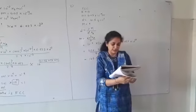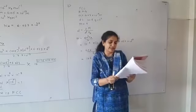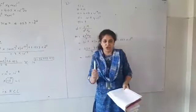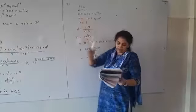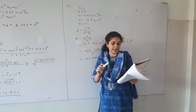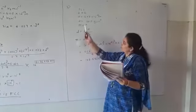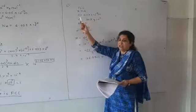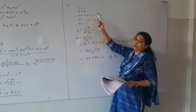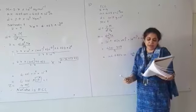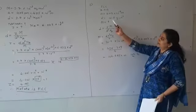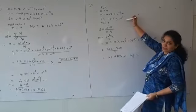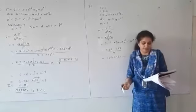I will first read it out and we will list the data. Silver crystallizes in FCC lattice. FCC means Z is equal to 4. This won't be mentioned, you should be aware of this. Its edge length is 4.07 × 10⁻⁸ cm. And density is 10.5 gram per centimeter cube. Now both are in the same system, both are in terms of centimeters. So I am not doing any conversion.